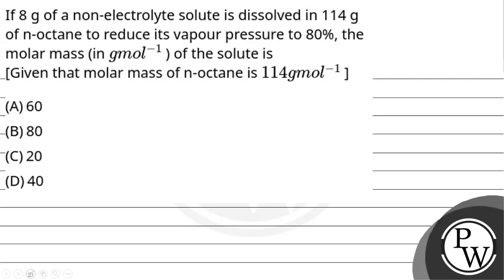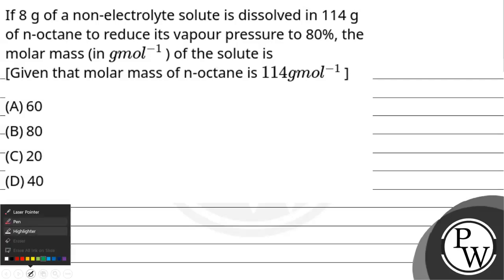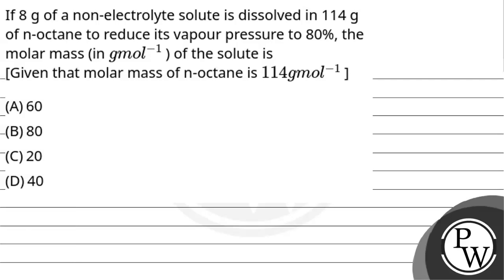Let us read out this question and then we will solve it. The question is: if 8 grams of a non-electrolyte solute is dissolved in 114 grams of N-octane to reduce its vapor pressure to 80%, the molar mass in gram per mole of the solute is — given that the molar mass of N-octane is 114 gram per mole.